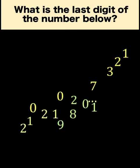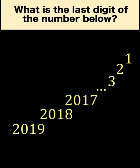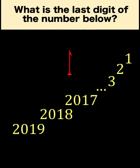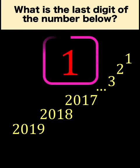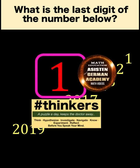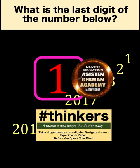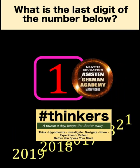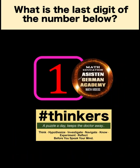So for our final answer, the last digit of this exponential number is equal to 1. This is our final answer. Thank you very much, and we hope to see you again in our next video. Bye for now.